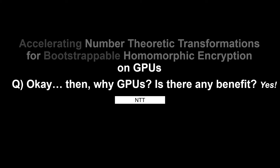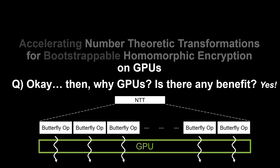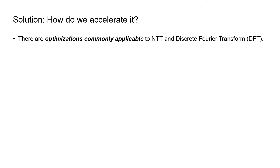Then why GPUs? Is there any benefit? Yes. NTT consists of butterfly operations that can be operated in parallel. GPU is eligible for computation which has such huge parallelism. So, how do we accelerate it? Because NTT is a specialized form of discrete Fourier transform, there are many commonly applicable optimizations to NTT and DFT.